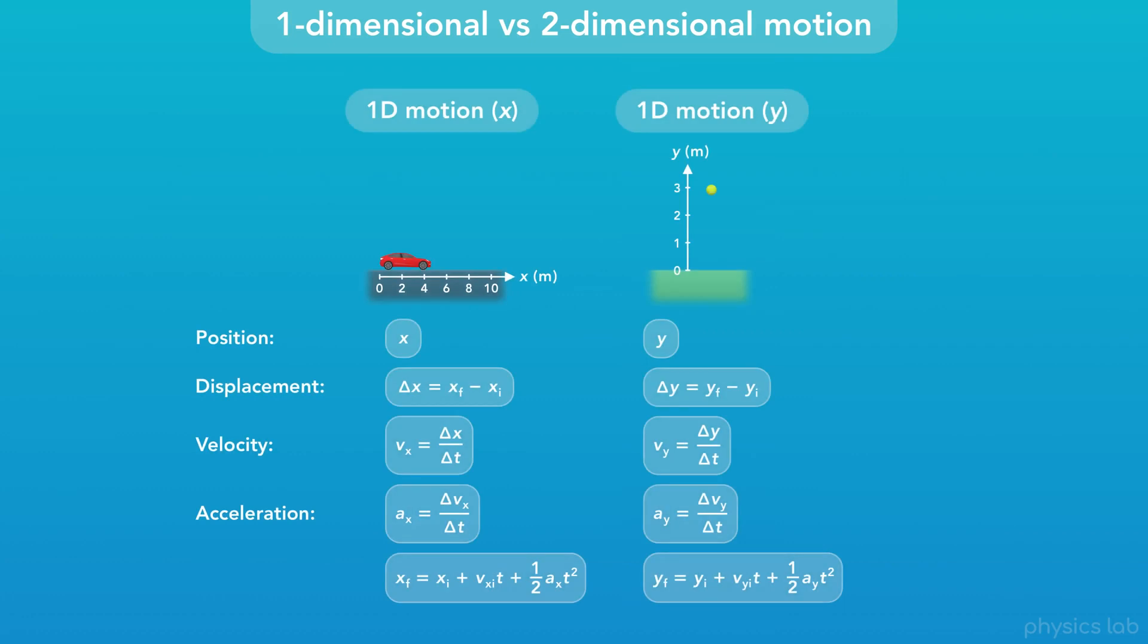For 1D motion, we use X for horizontal motion and Y for vertical motion, although the equations are the same.